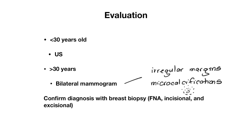We confirm the diagnosis with a breast biopsy, which can include a fine needle aspiration where you put a needle through the lesion and aspirate its contents. The algorithm for evaluating breast nodules is complicated, so the test will likely not ask for details beyond what's on the slide. More often, they'll ask how to diagnose the cause of a particular lesion, and that's where you rely on the high yield characteristics discussed earlier.